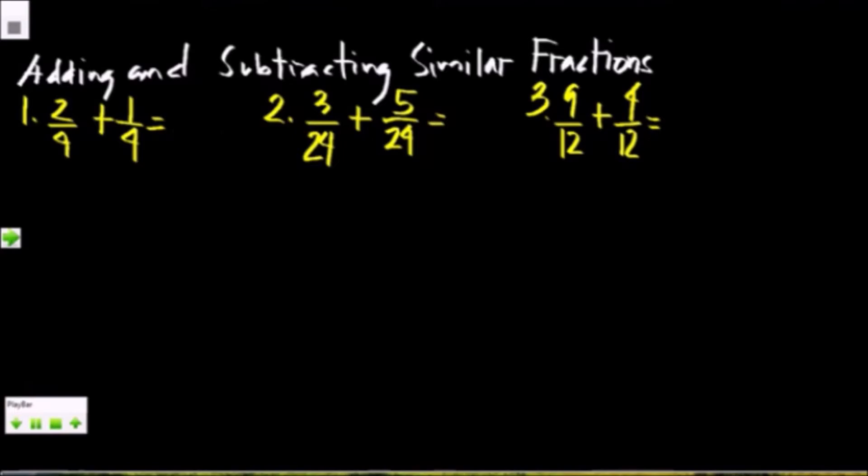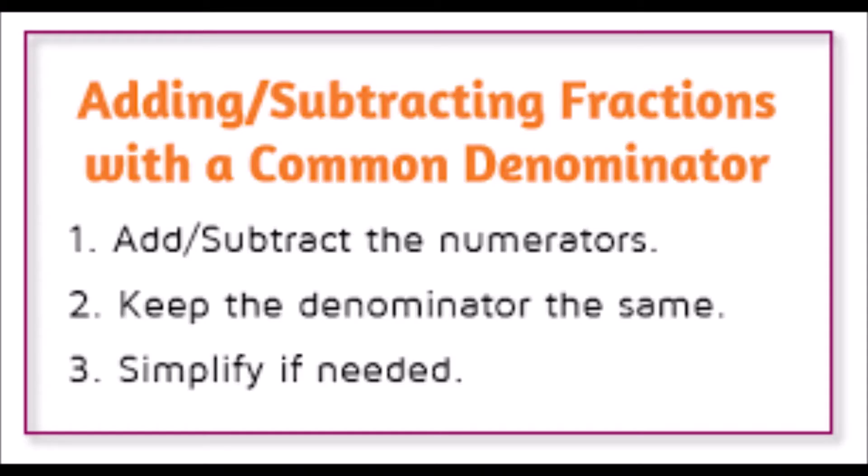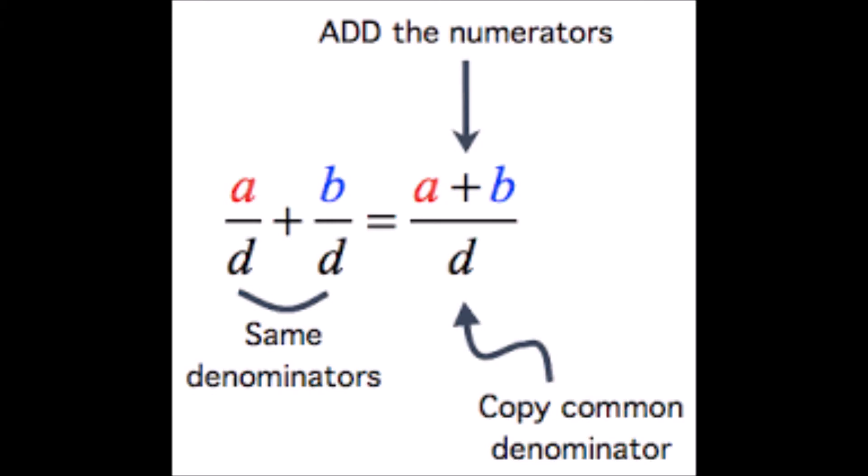In adding and subtracting fractions with a common denominator or similar fractions, first you are going to add and subtract the numerators, then keep the denominator the same or copy the denominator, and simplify if needed. Here is the diagram: A plus B, then copy the same denominator or common denominator. Let us proceed.